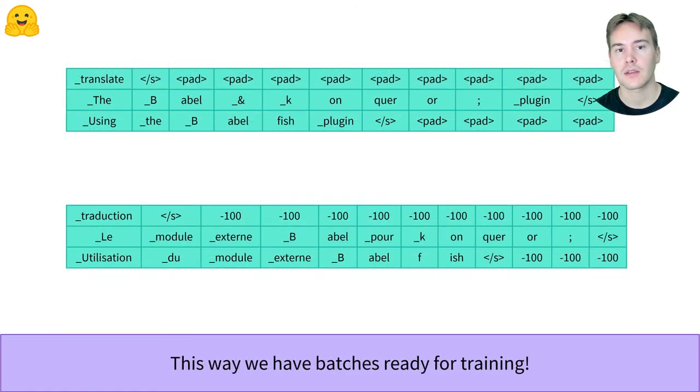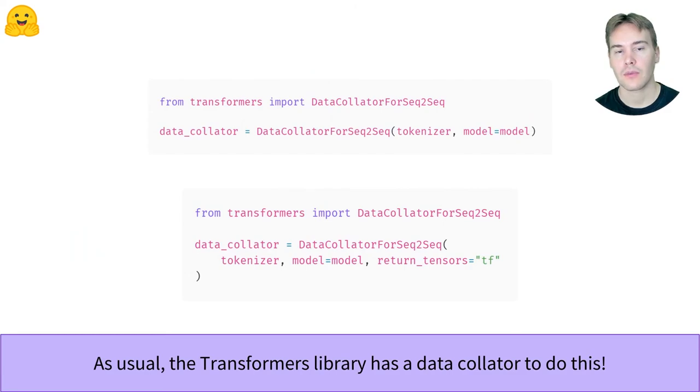Once this is done, batching inputs and targets becomes super easy. The Transformers library provides us with a data collator to do this all automatically. You can then pass it to the trainer with your datasets or use it in the to_tf_dataset method before using model.fit on your Keras model.